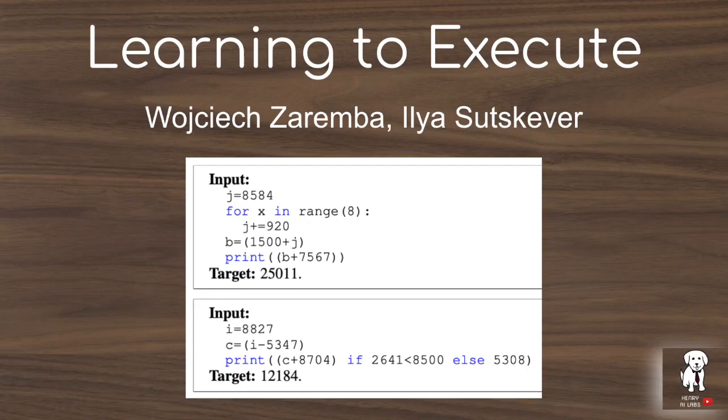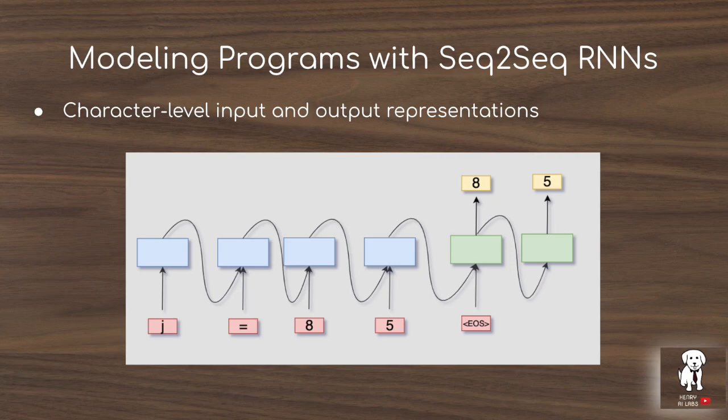This video will explore a really interesting paper, 'Learning to Execute', on the power of sequence-to-sequence encoder-decoder long-short-term memory networks to predict the output of Python programs which perform addition, multiplication, subtraction, and division.